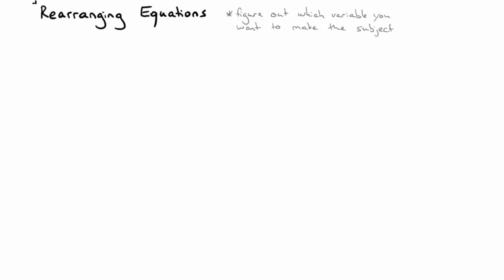And when you've figured out which variable it is you want to make the subject, which one it is you want to get on its own, then you have to just remember that whatever you do to one side of the equation, you need to do to the other.